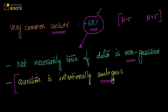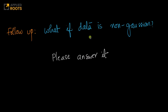This question is intentionally left ambiguous because the interviewer is expecting you to ask follow-up questions. A good follow-up question here is: 'Is the data Gaussian distributed?' If you have not asked it, you are making assumptions that the data is Gaussian distributed. The interviewer can then confirm approximately 68% is true if the data is Gaussian, and follow up with: 'What if the data is non-Gaussian? Can you say something about what percentage of values lie between mu minus sigma and mu plus sigma?'